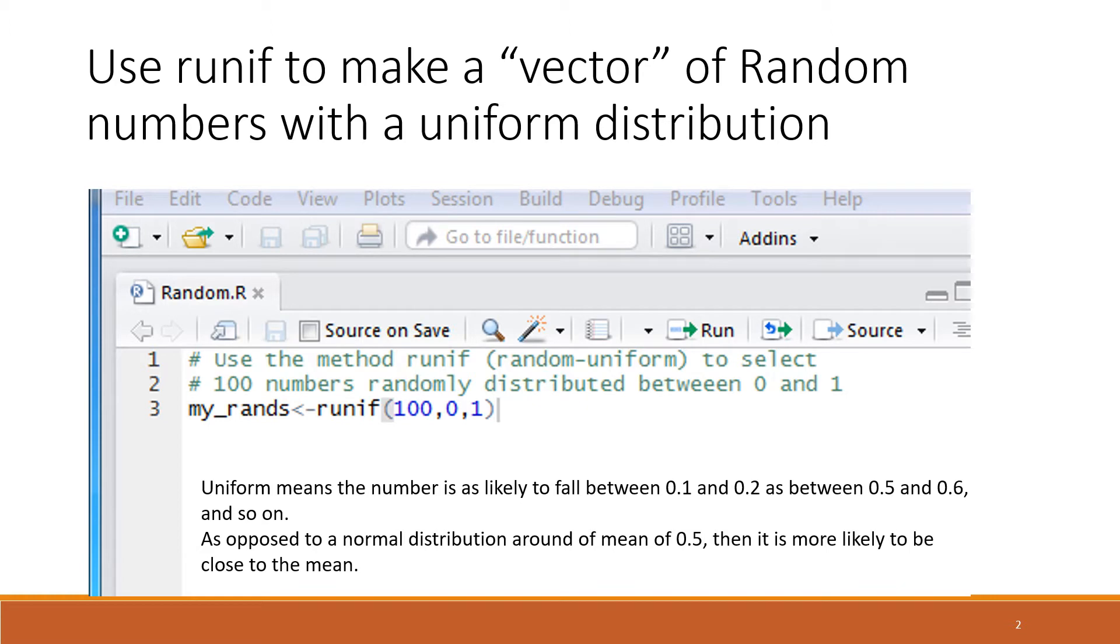In line three of the code below, we have an assignment statement. We have my_rands, that's just a variable name that we've made up. We're using the less than dash, the arrow notation for assigning.